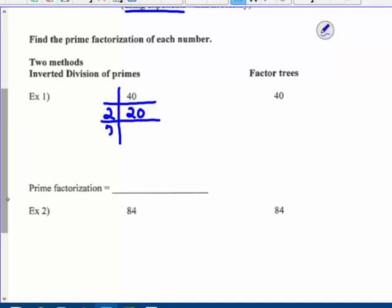2 can still come out of 20, 2 times 10. And 2 can still come out of 10, 2 times 5. 5 is a prime number, so I'm going to take that factor out. And my chart ends with a 1. That's how I know that I'm done.